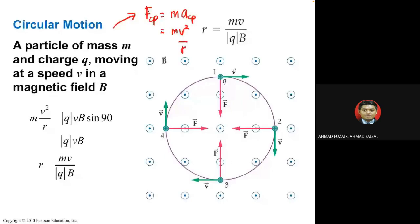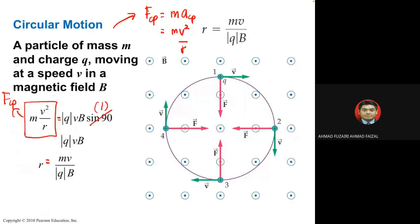The centripetal force equals mv²/r, since a_cp = v²/r. Setting F_cp equal to qvB sin θ, and when sin θ = 1, we get mv²/r = qvB. Rearranging gives r = mv/qB, which is the radius of circular motion.